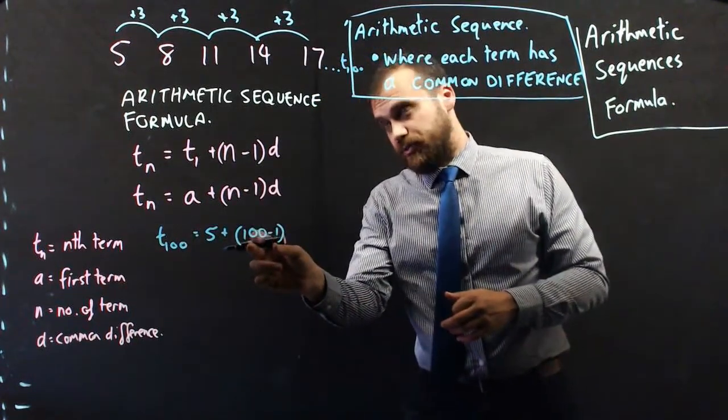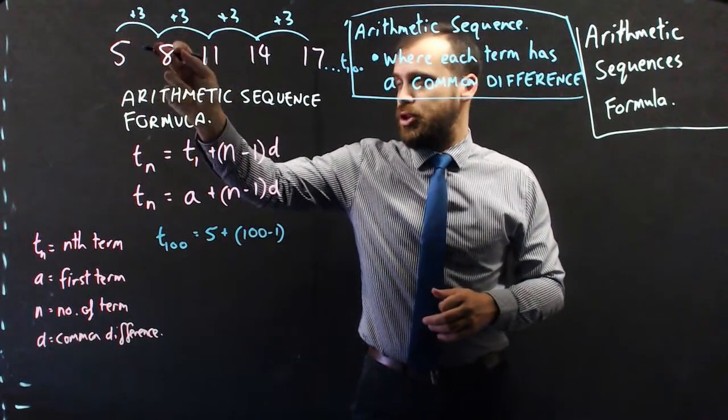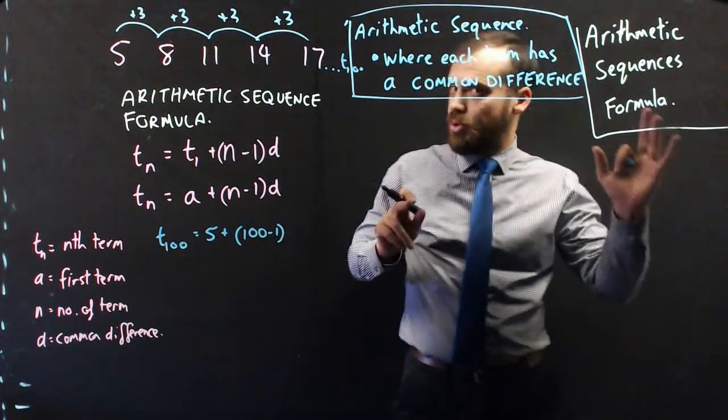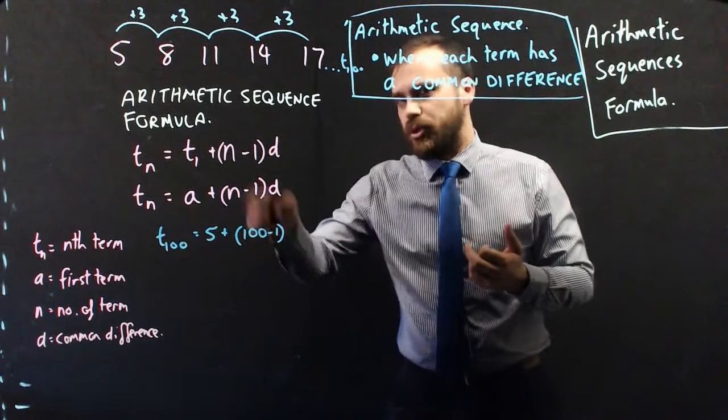Now, think about where that number comes from. Remember, I said to get to term 2, we do 1 leap. To get to term 3, we do 2 leaps. So, to get to term 100, we do 99 leaps. That's why that formula works that way.